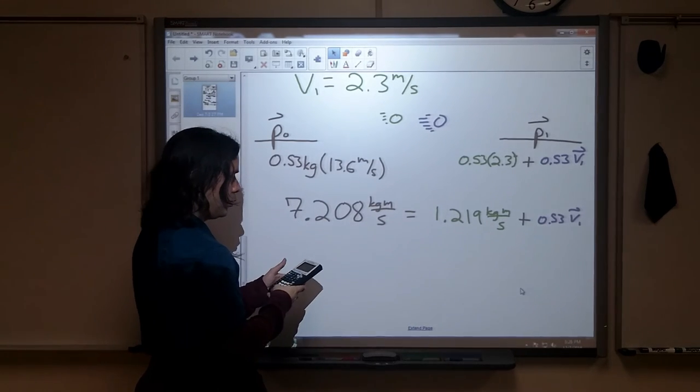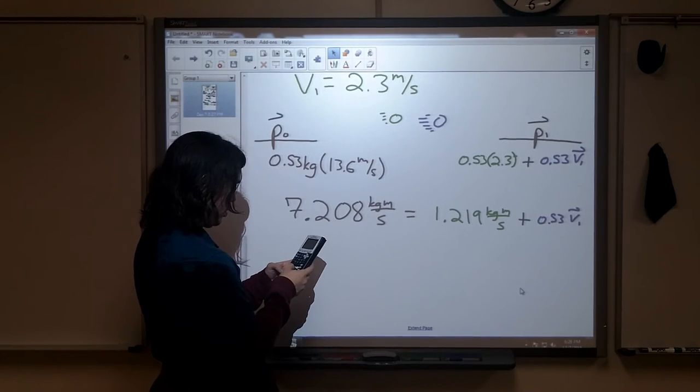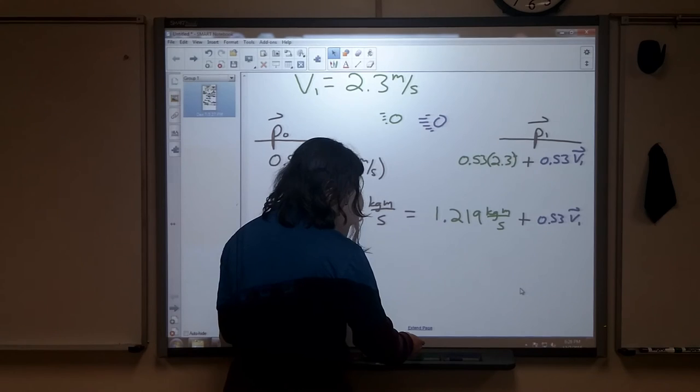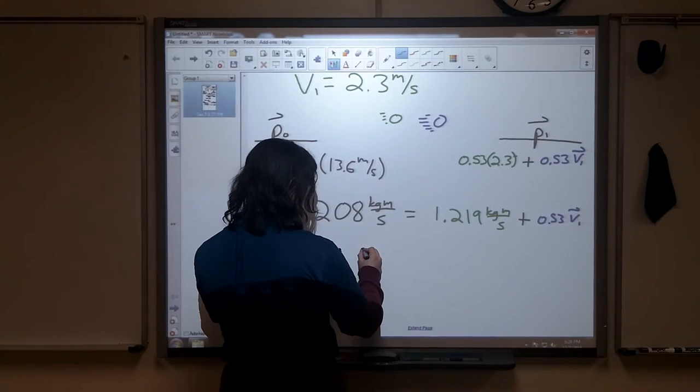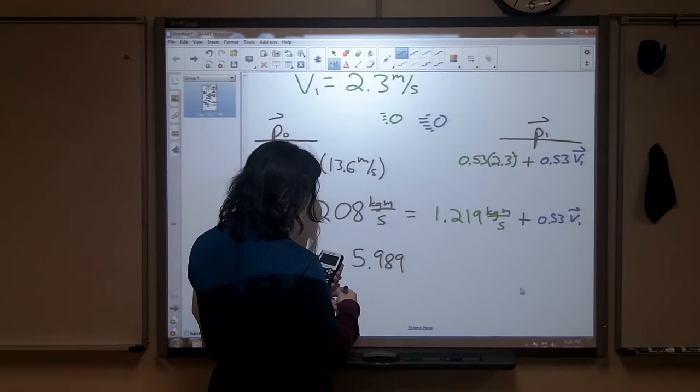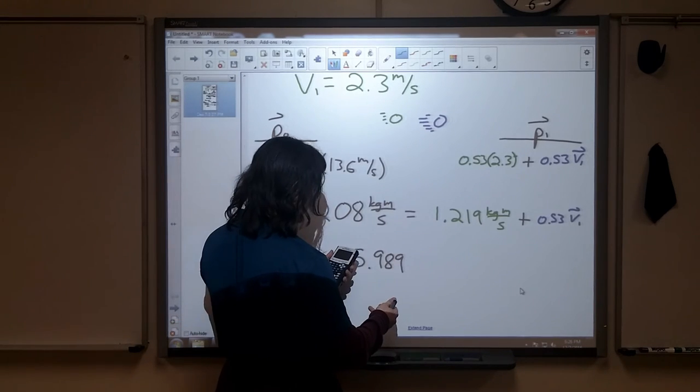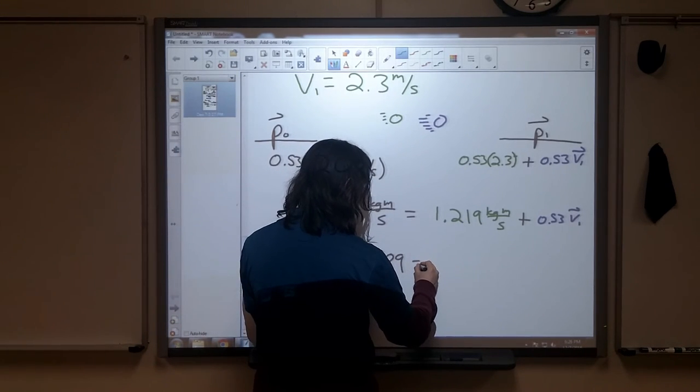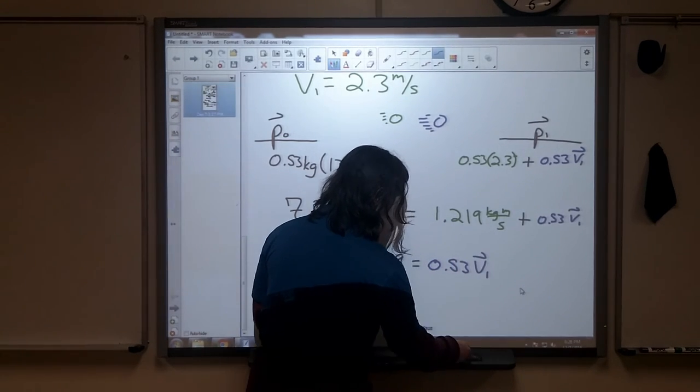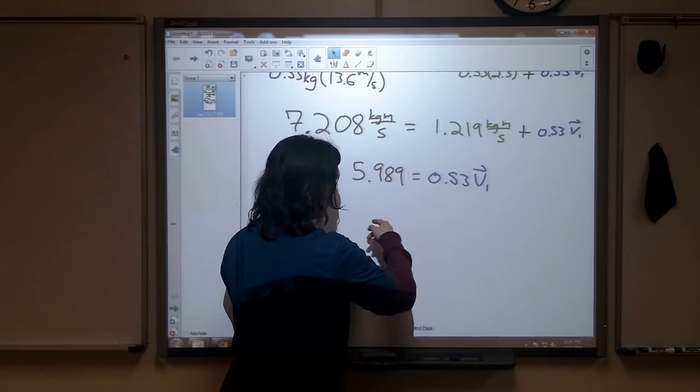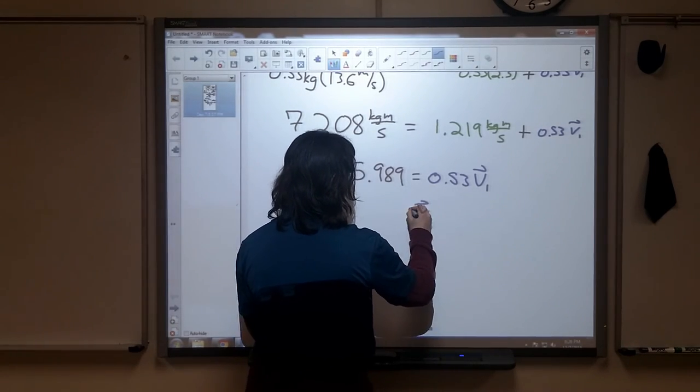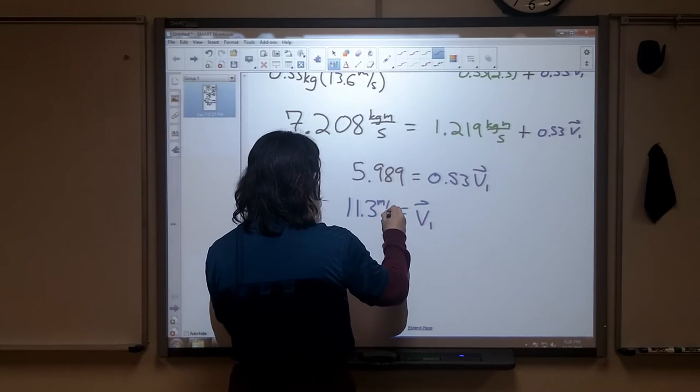Okay? I can subtract the 1.219, so I'm going to take 7.208 minus 1.219. Again, you could do this with three significant figures. I'm going to go ahead and leave it like this, just for my own amusement. 5.989, which probably did three significant figures. Well, 5.99. Although if you rounded these, it might have come up to just 6.0, but that's fine. Equals 0.53 times my final velocity. I can divide both sides by 0.53. I find that my final velocity in this circumstance is 11.3 meters per second.